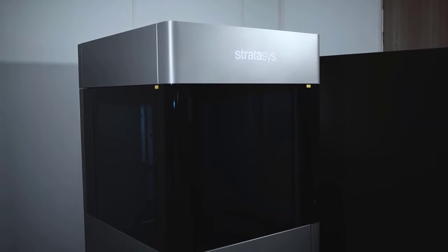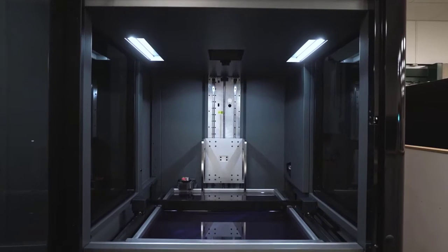Stereolithography is an additive manufacturing process that uses a vat of UV curable photopolymer resin and a UV laser to build parts one layer at a time.